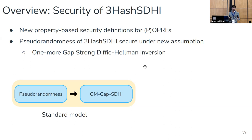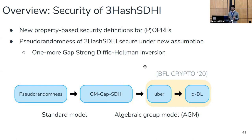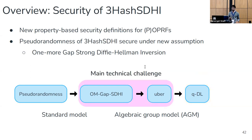The main technical challenge is proving hardness of our new proposed assumption. For that we provide a reduction in the algebraic group model to q-discrete log, going through an intermediate uber assumption proposed by Bauer, Fuchsbauer, and Loss recently. This lets us abstract some of the messy details of the AGM proof into an argument about linear independence of the group elements in the game. I'll focus on this main technical challenge and provide some intuition for how this algebraic group model analysis for our new assumption goes.